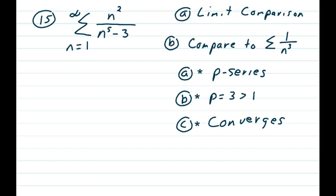Problem 15: summation n equals 1 to infinity of n squared over n to the fifth minus 3.